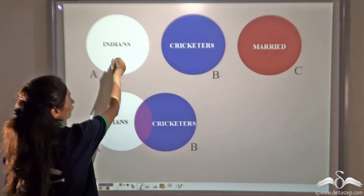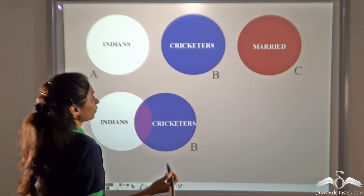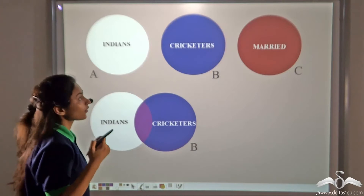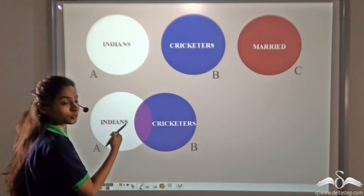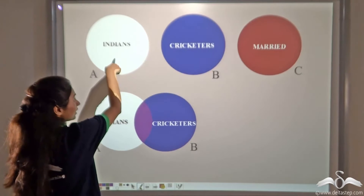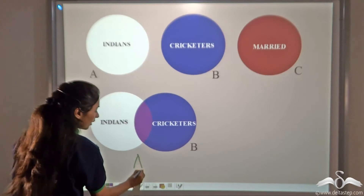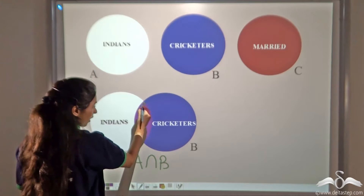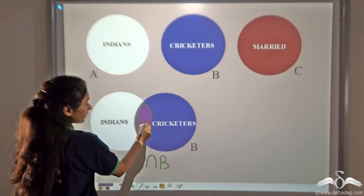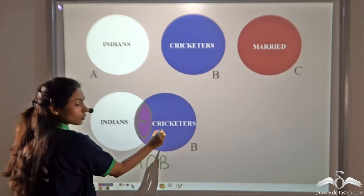Here we have a set of Indians, a set of cricketers, and a set of married people. If I ask you to find out Indians who are cricketers, you will find out people who belong to both set A (Indians) and set B (cricketers). So you find A intersection B. This part shows people who are Indians as well as cricketers — they belong to both these sets.